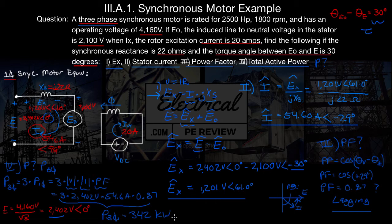Now, if the question had asked for power per phase, we would not use the factor of three — we'd just solve for single-phase power as voltage magnitude times current magnitude times power factor, which of course would be 342 kilowatts divided by three.